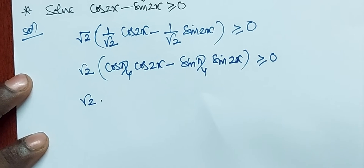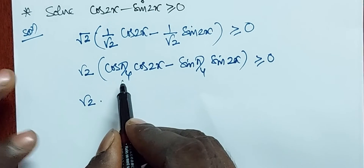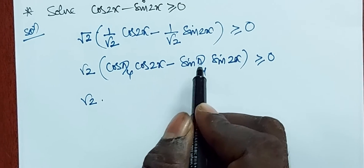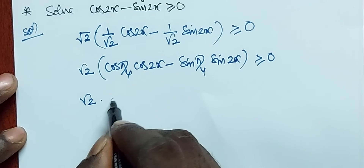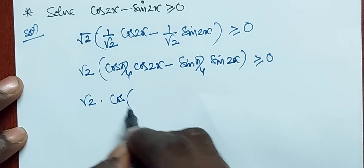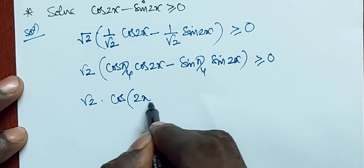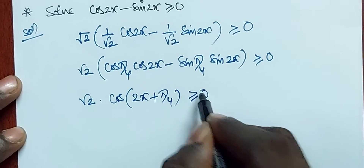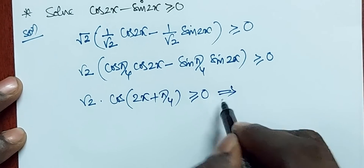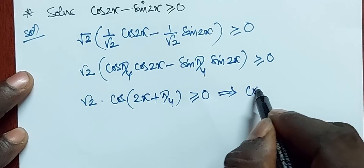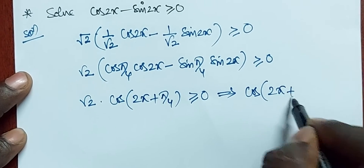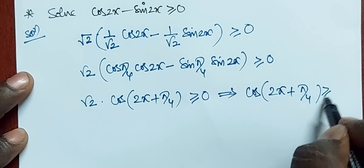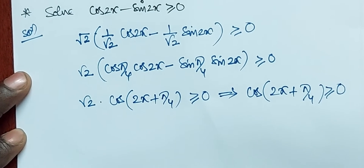Now using the identity cos(a)cos(b) minus sin(a)sin(b) equals cos(a+b), this becomes root 2 times cos(2x + π/4) ≥ 0, which is nothing but cos(2x + π/4) ≥ 0.